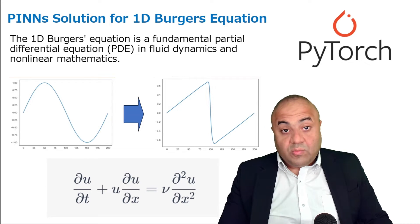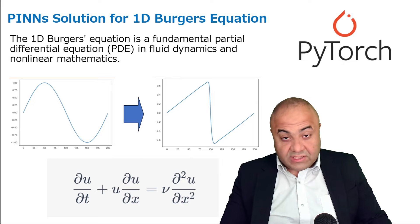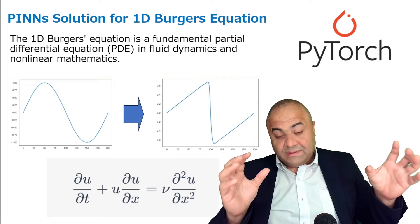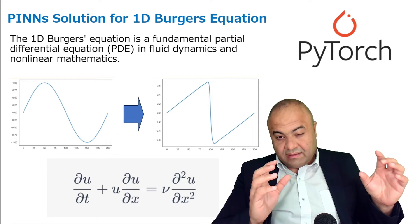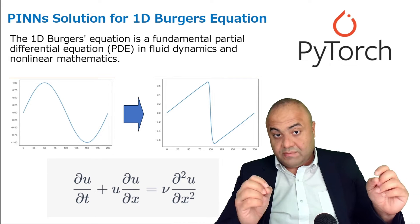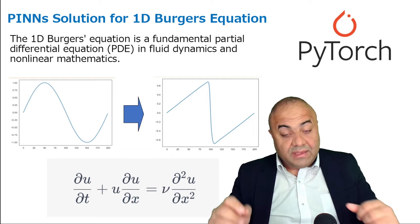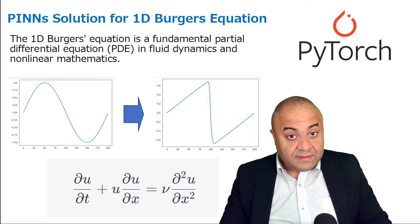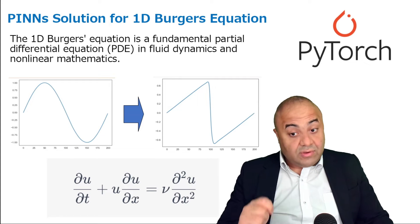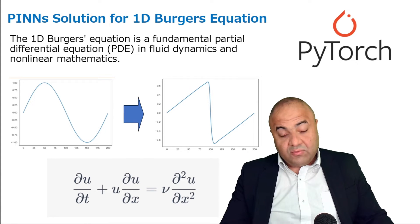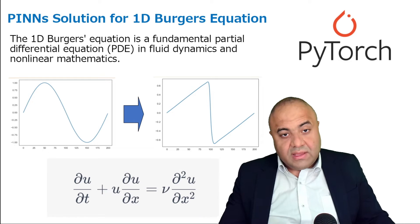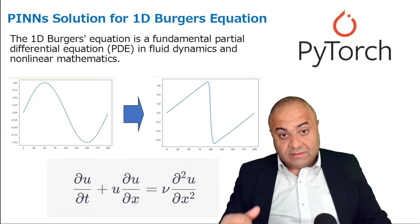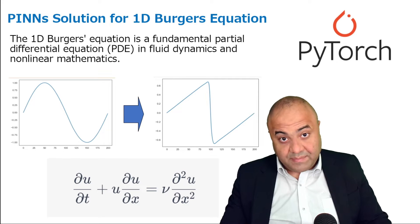In this step, we will understand how the flow of computation works. We will start from modeling our problems — defining the equations we need to solve, the initial conditions, and the boundary conditions — then translate them into PyTorch code and write our own neural network to solve the problem. This is a very important step to understand the computational process for solving a PINNs problem.